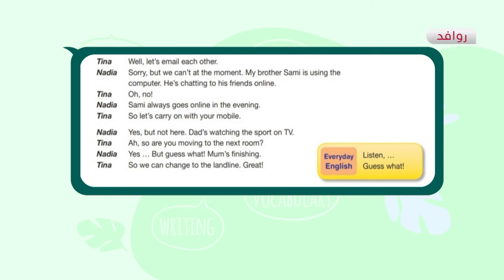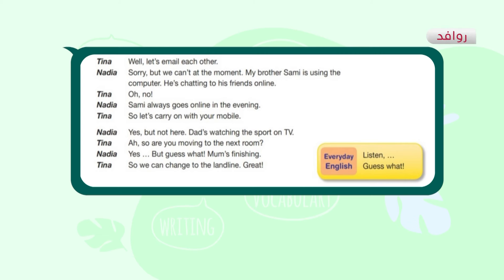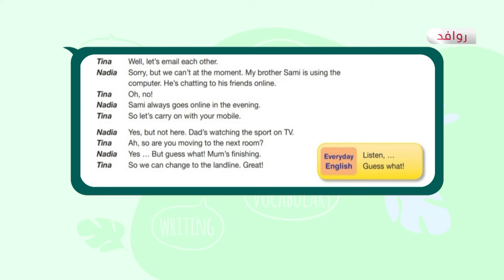Tina suggests they email each other. Nadia apologizes — she can't because her brother Sammy is chatting with friends online. Tina feels sorry. Nadia explains Sammy always uses the internet in the evening. Tina says let's continue on the mobile. Nadia says yes, but not here — her dad is watching sport on TV. Tina asks if she is moving to another room. Nadia says yes, and her mom has finished her call, so they can use the landline. Great.